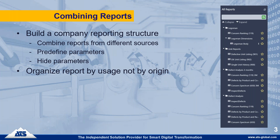You can build your company reporting structure and pre-define parameters. Some reports have many parameters, some of which are not in use in your company — so you can hide them and reduce the complexity. One of the other core functionalities is that you can organize your reports by usage, not by origin. For example, this Legoman folder contains both InSpec and CM4D reports, and the defect analysis three-months folder contains InSpec and a Power BI report.